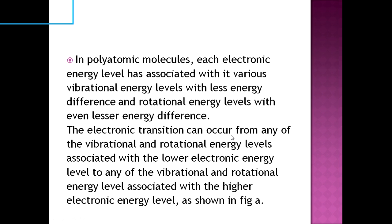The electronic transition can occur from any of the vibrational and rotational energy levels associated with the lower electronic energy level to any of the vibrational and rotational energy levels associated with the higher electronic energy level. جو lower electronic energy level ہوتا ہے، وہاں سے electronic transition start ہوتی ہے اور electron higher electronic energy level میں move کر جاتا ہے.